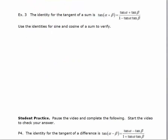We've looked at a few identities dealing with the cosine of a sum or a difference, and we had an example using the sine of a difference. Now we want to look at a tangent problem. The identity for the tangent of a sum is: tangent of alpha plus beta equals tan alpha plus tan beta, over 1 minus tan alpha tan beta. We're going to use the identities for sine and cosine to verify this trig identity.